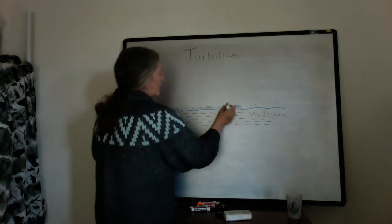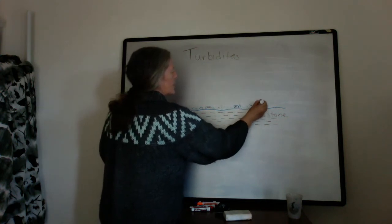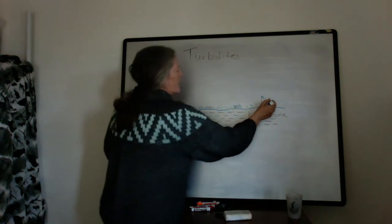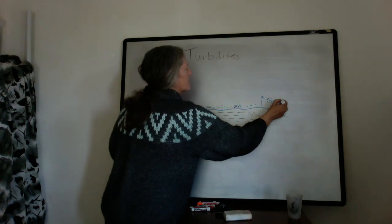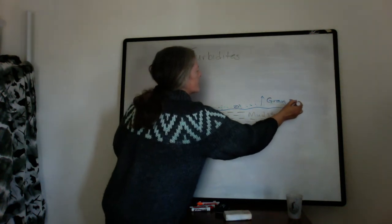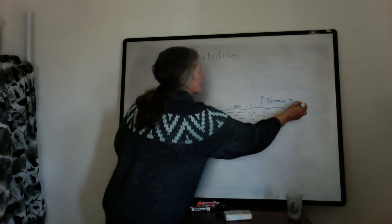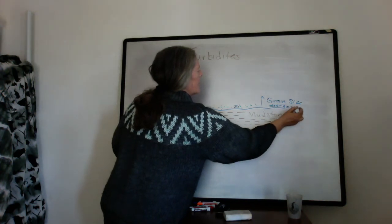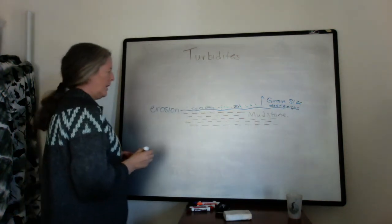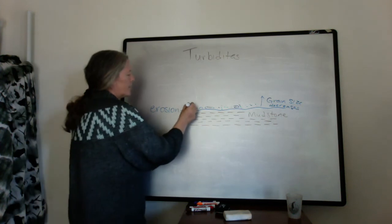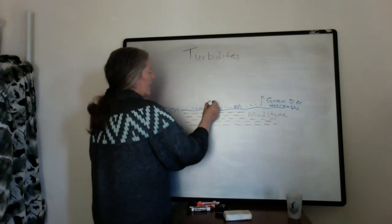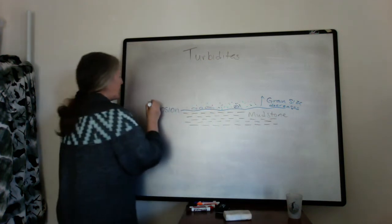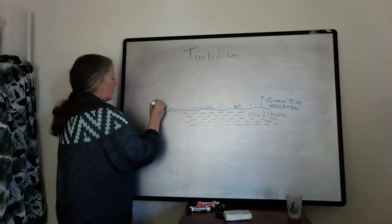So you have pebbles and coarse sand, and generally if you go upward in a turbidite, the grain size decreases. We would say it's fining upward. This lower part usually doesn't have any sedimentary structures in it at all, so we'd call it massive.